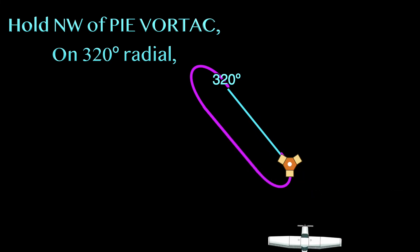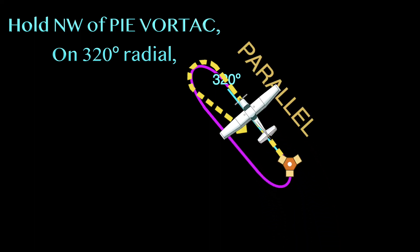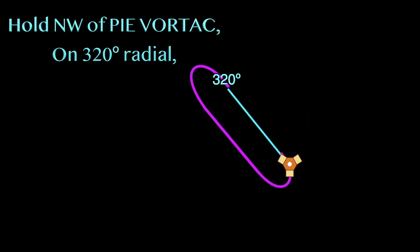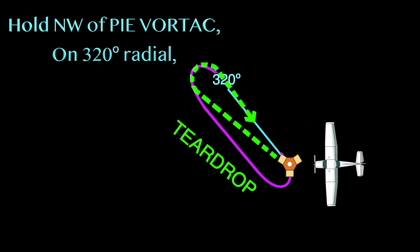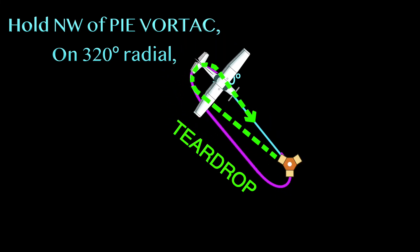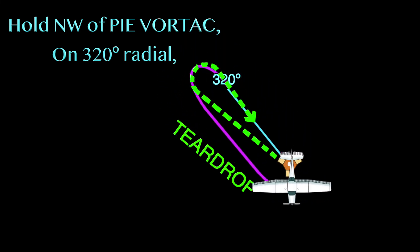How about if we were heading towards the hold from this angle? In this case, it looks like the parallel entry makes the smoothest transition. And from here, the teardrop would help the aircraft be able to maintain its path as much as possible.